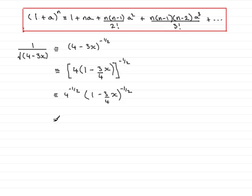Okay, so 4 to the minus a half, well that's 1 over 4 to the half, and that would mean 1 over the square root of 4, which is 1 over 2. So a half then. Now we've now got this bracket and the power in this format here, so we can expand this using the binomial expansion.